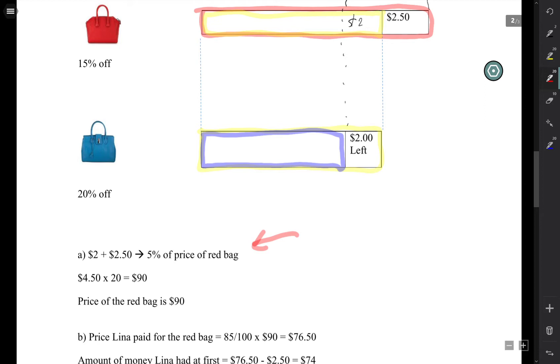And if we want to find the total price of the bag, just multiply by 20. So the price of the bag is $90. Now, why do we multiply by 20? Because if 5% represents $4.50, I multiply by 20, I get 100%, which will be $90. So the price of the bag is $90.